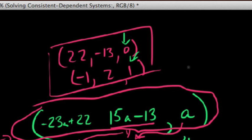So the rule of thumb is this: if you ever get a consistent dependent system, just say z equals a, and then back solve by plugging that back into your second and first equations respectively to find x and y. Enjoy.